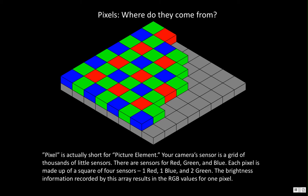Pixel is actually a shortened version of picture element. Your camera sensor inside your camera is a grid of thousands of little tiny sensors. Looking at this diagram, one square contains four different sensors: a red sensor, a green sensor, a blue sensor, and then another green sensor. Each pixel of your image is made up of the information from a red, a blue, and two different green sensors. Why two different green sensors? Well, three different square sensors do not make a square, so they add an extra green and take half the information from one, half from the other.